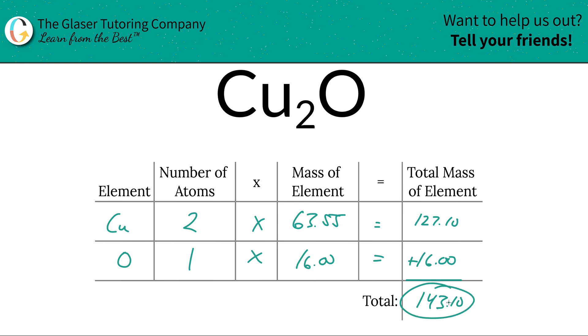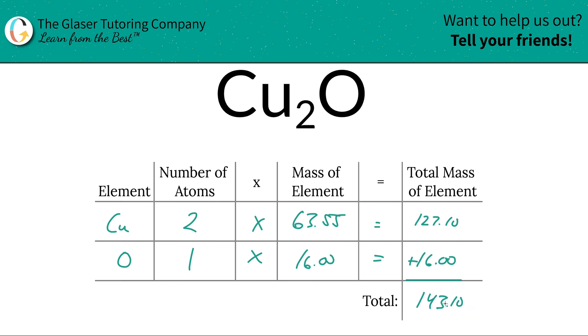So in finding the percent composition, this was the first thing to do, find the total mass. Now that we found the total mass, we're going to add a column to this table. It's going to be easy peasy from here.